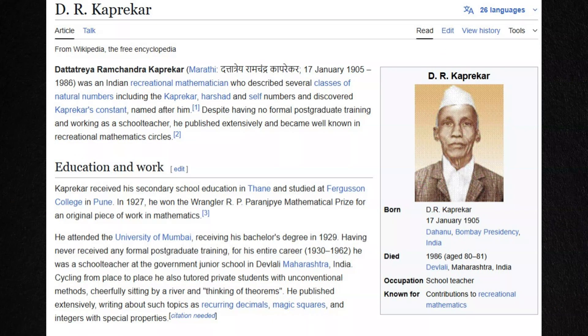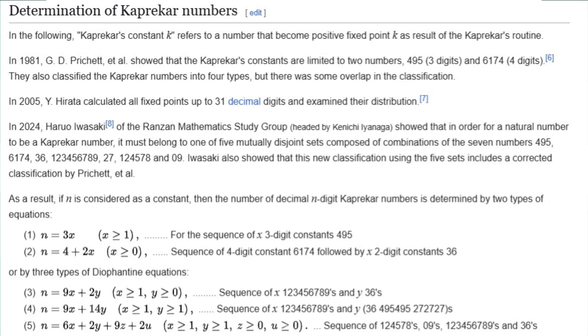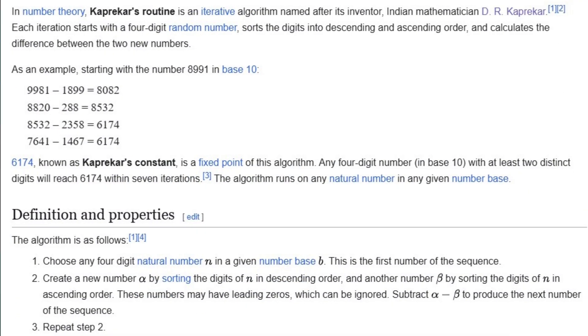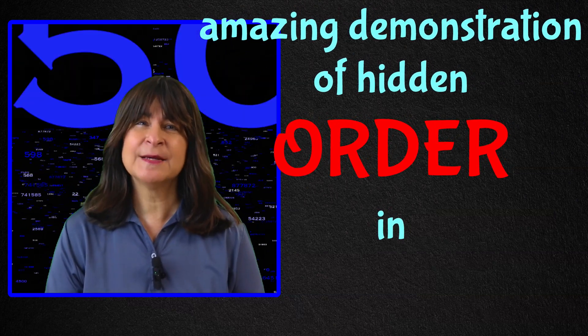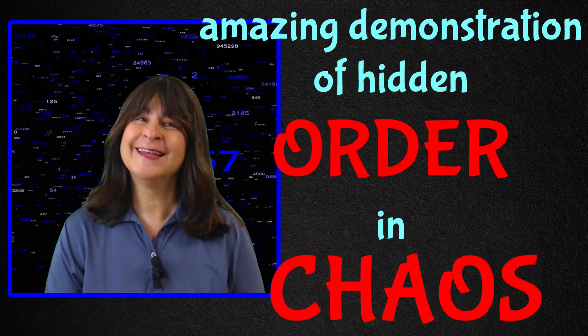In the mid 20th century Kaprekar stumbled upon something magical hidden inside ordinary numbers. By performing a few simple steps, rearranging digits and subtracting, he found that no matter which number you start with, within certain limits, you'll inevitably land on the same constant number. And it happens fast. The steps used to arrive at these numbers are called Kaprekar's routine. And this, if you think about it, is an amazing demonstration of hidden order in chaos.